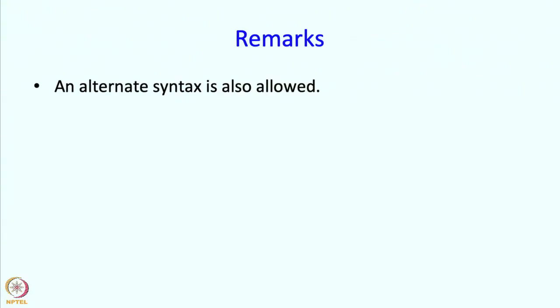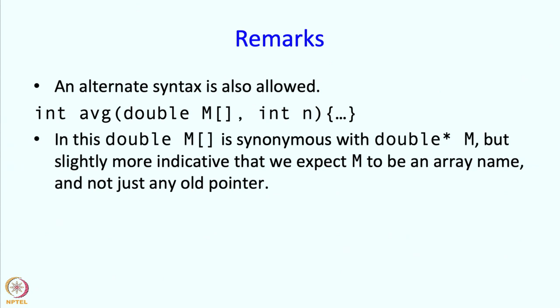Now, when we write functions, an alternate syntax is also allowed and maybe it is recommended. I can write the average function as not double star m but double m square brackets. In this, double m square brackets is synonymous with double star m. It means the same thing. But it is slightly more indicative that we expect m to be an array name and not just any old pointer. But this is really for our benefit. C++ treats both of these things as essentially the same. And I should further note that this m square bracket open square bracket close syntax is not allowed in other places besides the declaration or definition of a function.